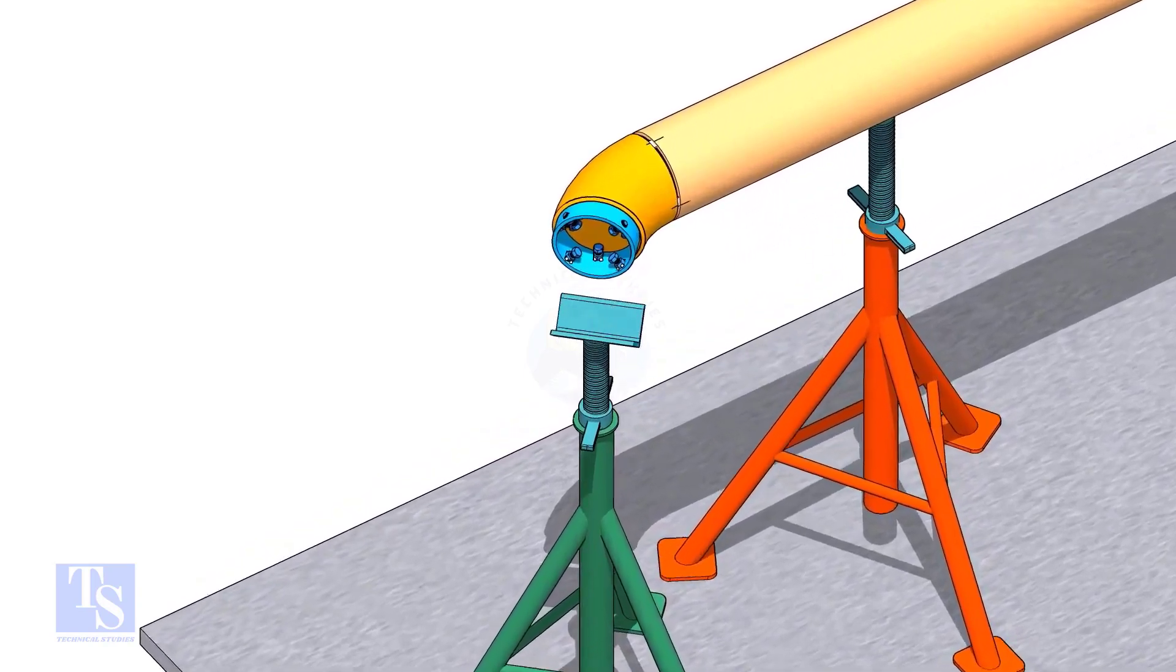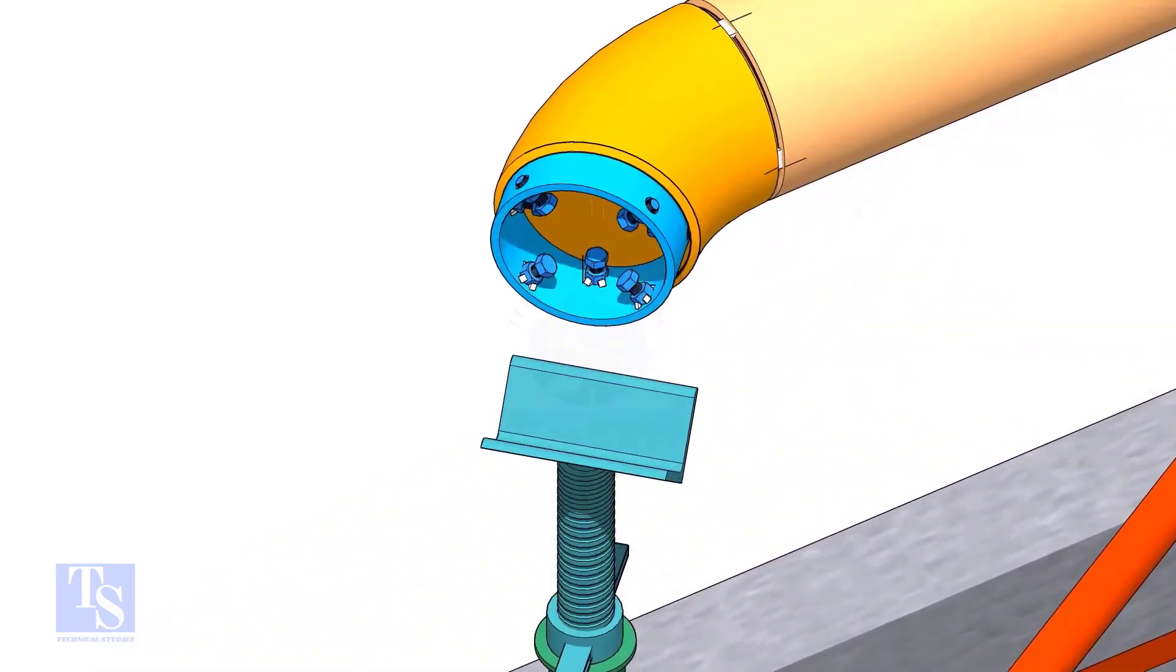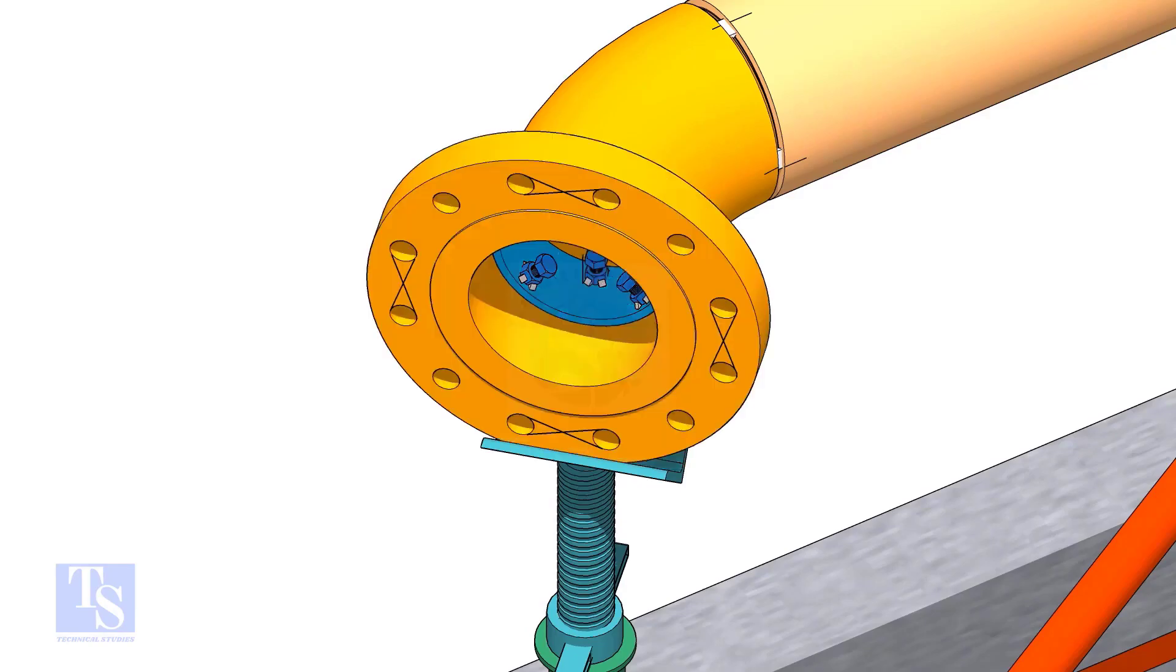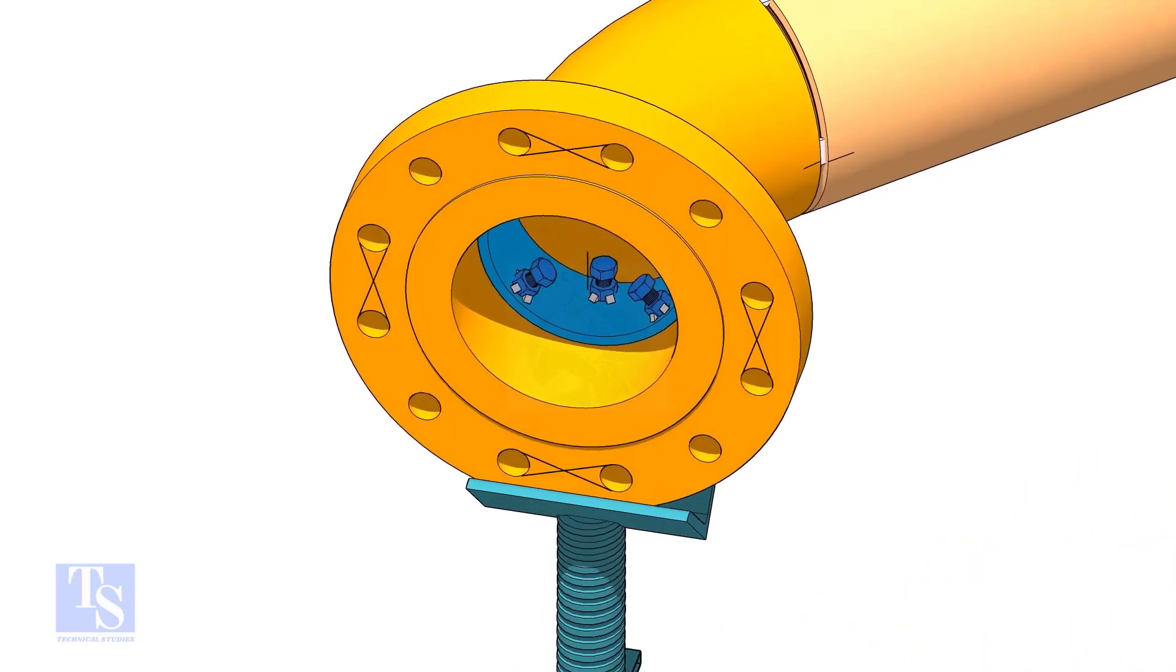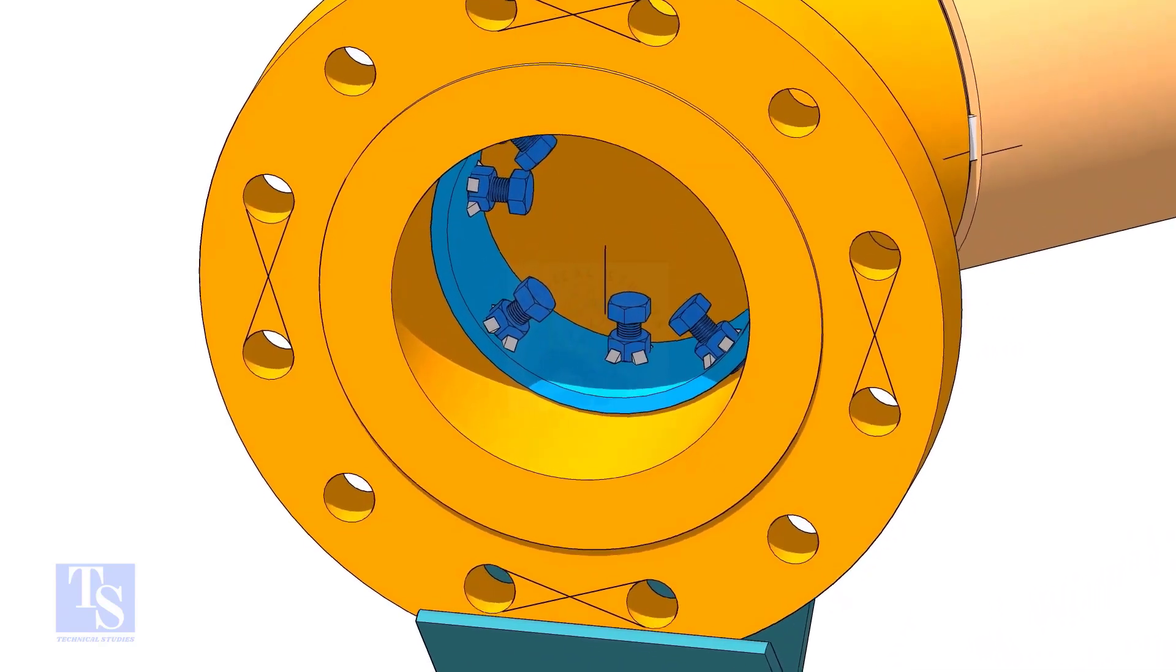Put the clamp in the elbow and tighten lightly. Put the flange in its position and maintain the level.